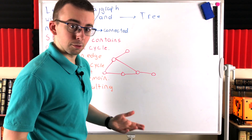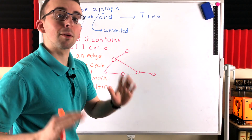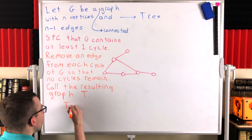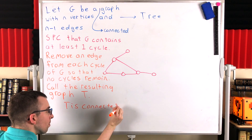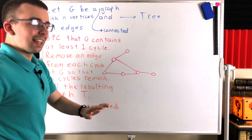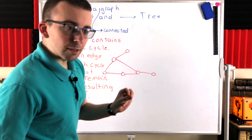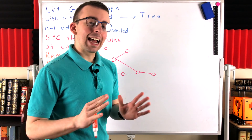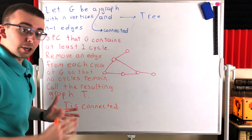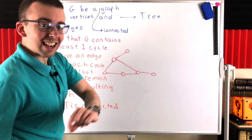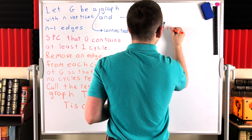So T is connected, because we got from G to T by deleting edges from cycles of G. T is connected. And by definition — the way we got to T — it has no cycles, because we removed edges until there were no cycles left in G. So T is a connected acyclic graph. What does that mean? That means T is a tree.